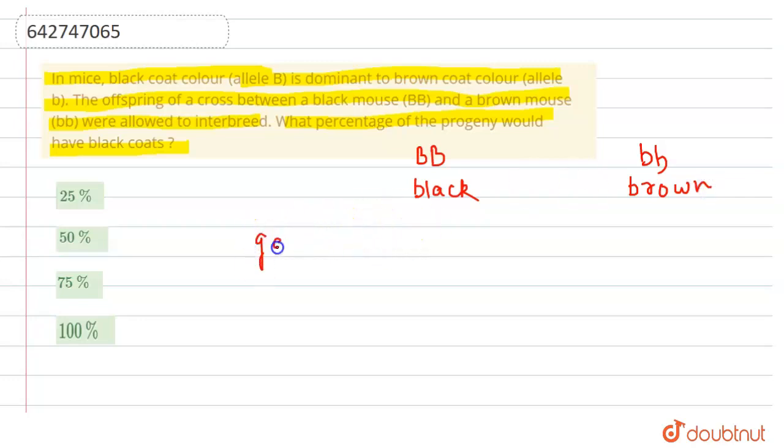The first thing should be about gamete formation. From here, capital B will be the gamete, and from here, small b will be the gamete. This will result in the formation of the F1 generation. From here we will get Bb, and from here it will be Bb as well.